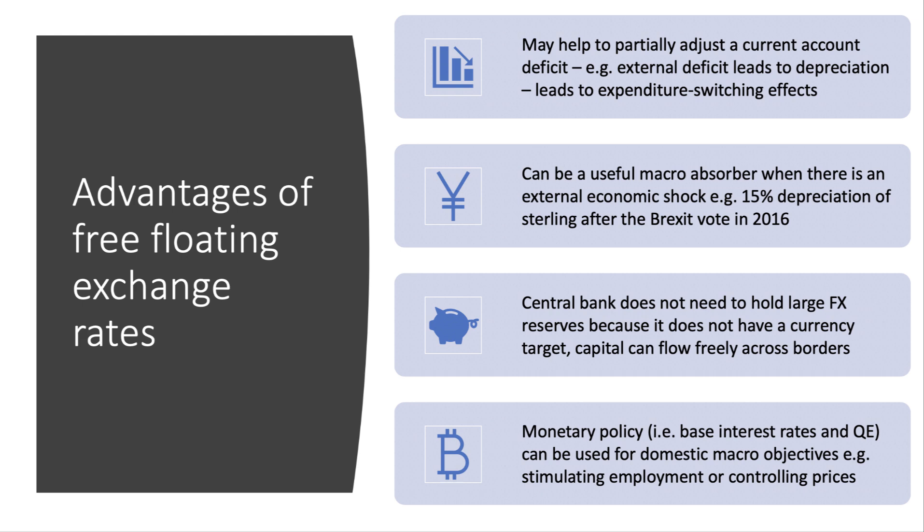One key advantage is that it can help to partially adjust or correct a current account deficit. If a country is running a large trade or current account deficit, that typically brings the value of the exchange rate down because there's an excess supply of currency leaving the circular flow. A depreciation of the currency then leads to expenditure switching effects — exports become cheaper, imports become more expensive — and depending on the price elasticity of demand for imports and exports, and the Marshall-Lerner condition and the J-curve working through, that can improve the trade balance.